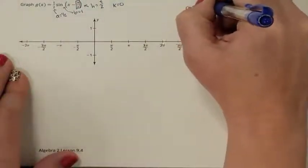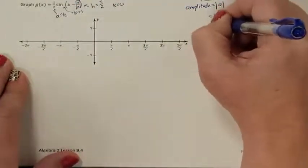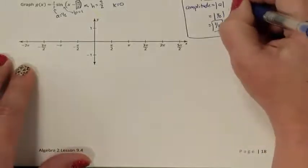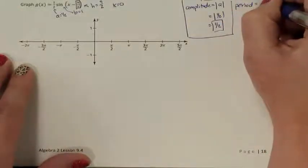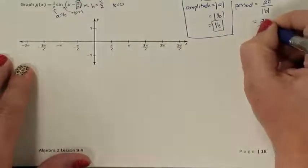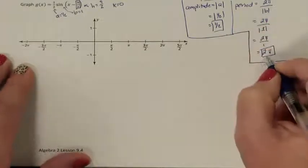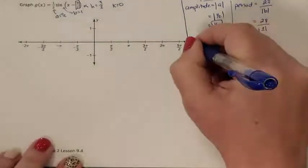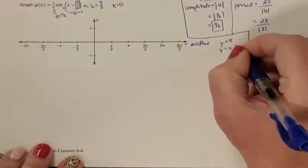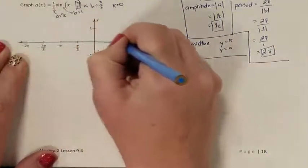To graph this, the first thing is amplitude — the absolute value of a, which is one-half. So my graph is going to be one-half tall from the midline. My period is 2 pi over the absolute value of b, which is 2 pi over 1, giving me 2 pi — this will repeat every length of 2 pi. My midline is y equals k, but k is 0, so my midline is still the x-axis.